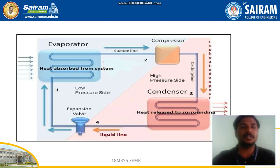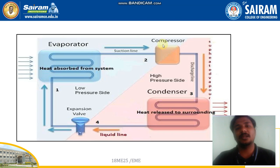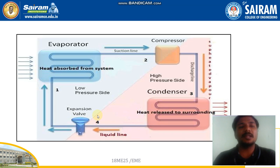You can see the block diagram of vapor compression. The major parts of this refrigeration system are: evaporator, compressor, condenser, and expansion valve. These are the major parts of the refrigeration system — without these parts it cannot work.